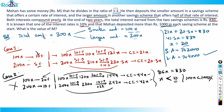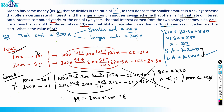Only Case 1 is correct, so m = 2000 + 4000 = ₹6000. That's the answer. This was a good question from 2021 — it looks easy but you need to check two cases carefully.